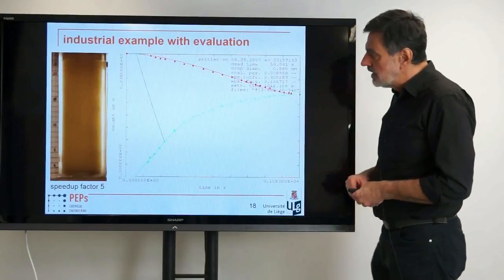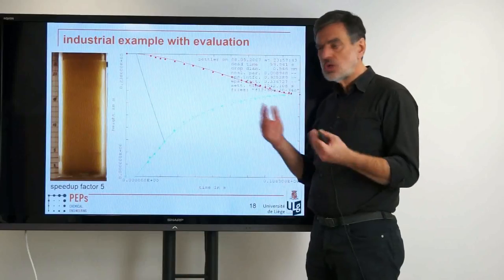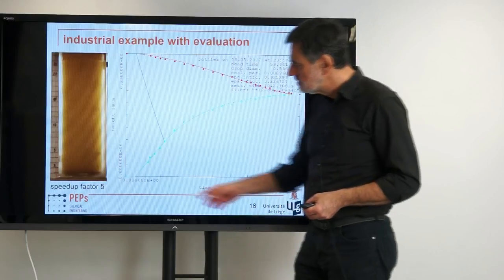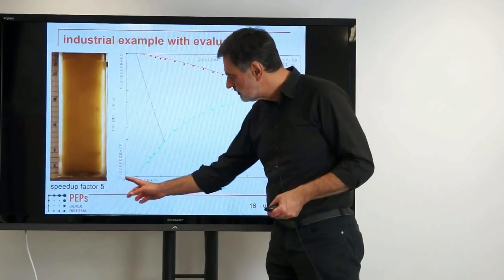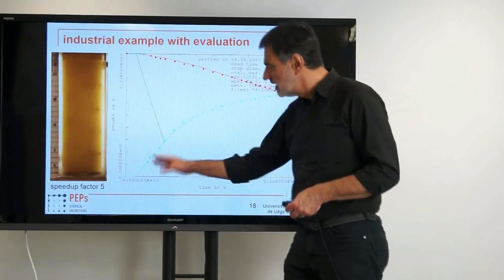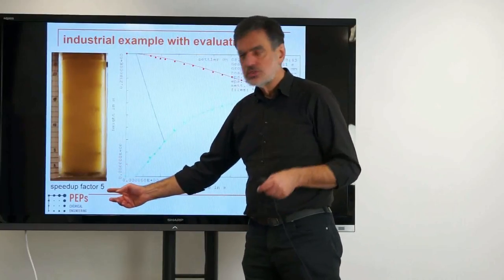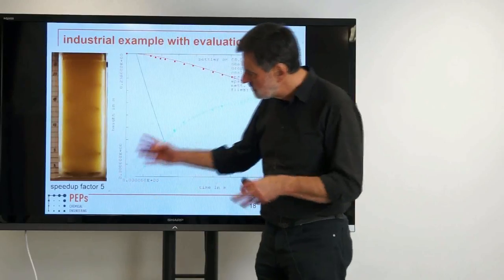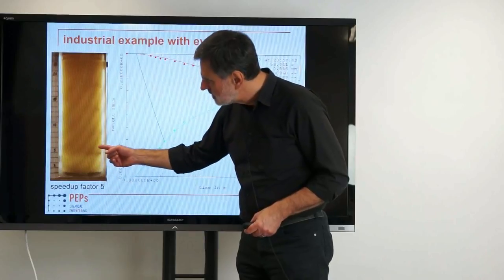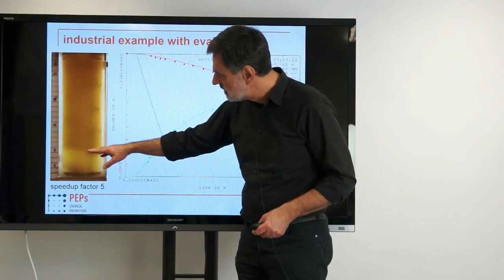For a real system, it looks like this — a real industrial system. Dispersion has been produced and now we are just waiting. The time scale is roughly 1000 seconds with a speed-up factor of 5. For the first, something of the order of less than 100 seconds, nothing happens and only then something can be observed. Around now you realize that down here it is a little bit lighter and up here a little bit darker — in between you can guess the sedimentation curve, with this level moving up.